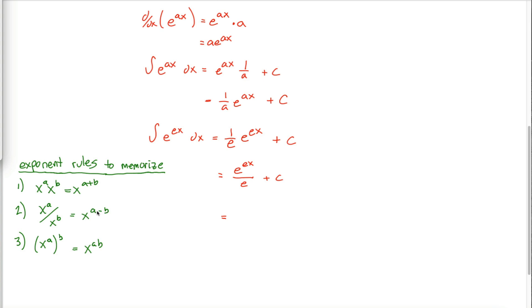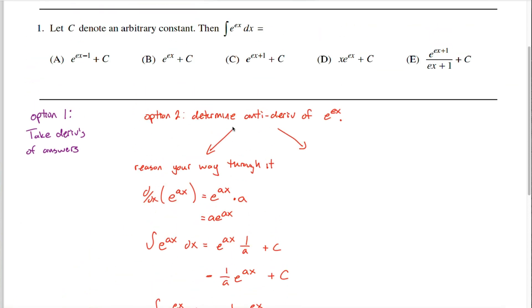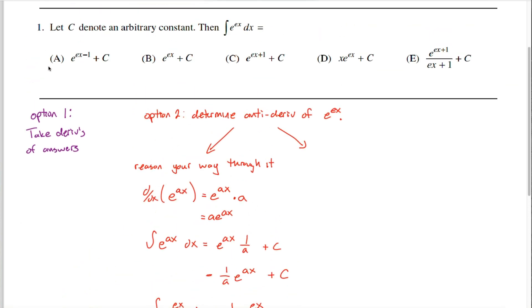The second of these three exponent rules tells you that when you're dividing two exponential expressions that have the same base, you can rewrite that as the base raised to the difference in those exponents. Using this second rule, I can rewrite this expression as e raised to the ex minus 1 power. And I believe this is the format that you see up here in the answers. Here it is, e to the ex minus 1 plus c.